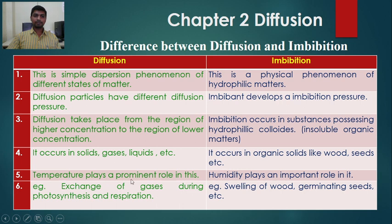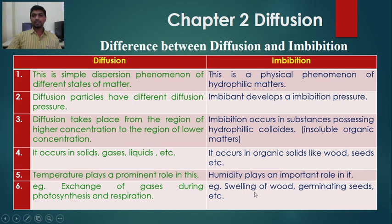Temperature plays an important role in diffusion, while humidity drives imbibition. Examples of diffusion include the exchange of gases during photosynthesis and respiration, while examples of imbibition include swelling of wood and germinating seeds. Hydrophilic colloidal materials such as protein, agar, gelatin, and cellulose swell when they come in contact with water — and humidity plays an important role in the process of imbibition. These are the main differences between diffusion and imbibition.